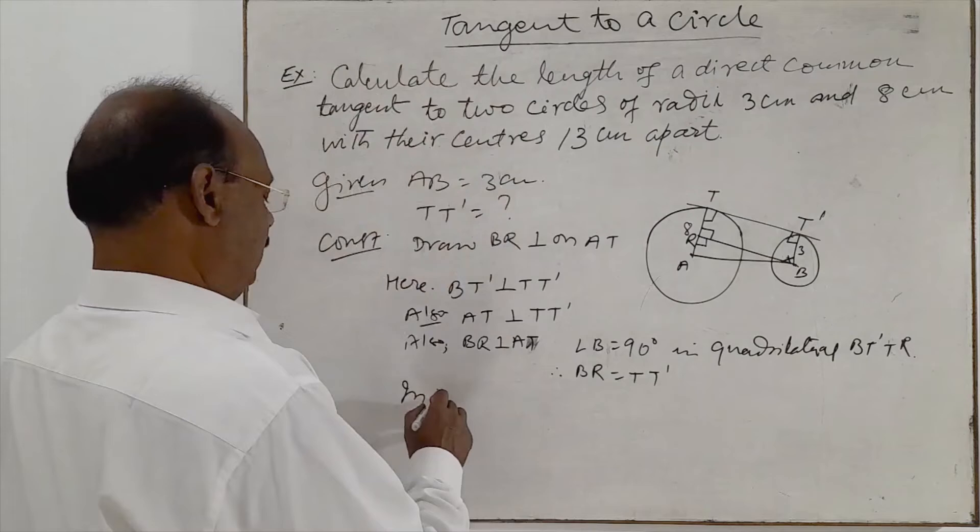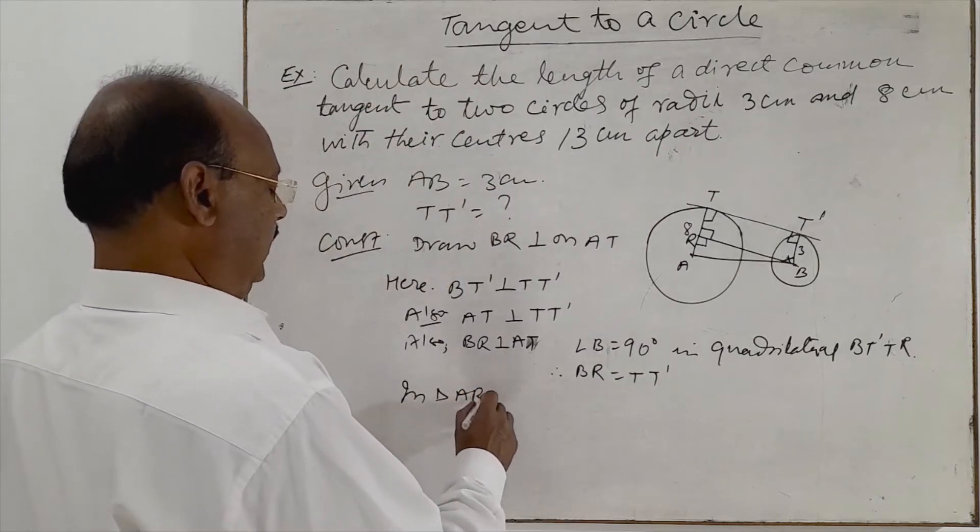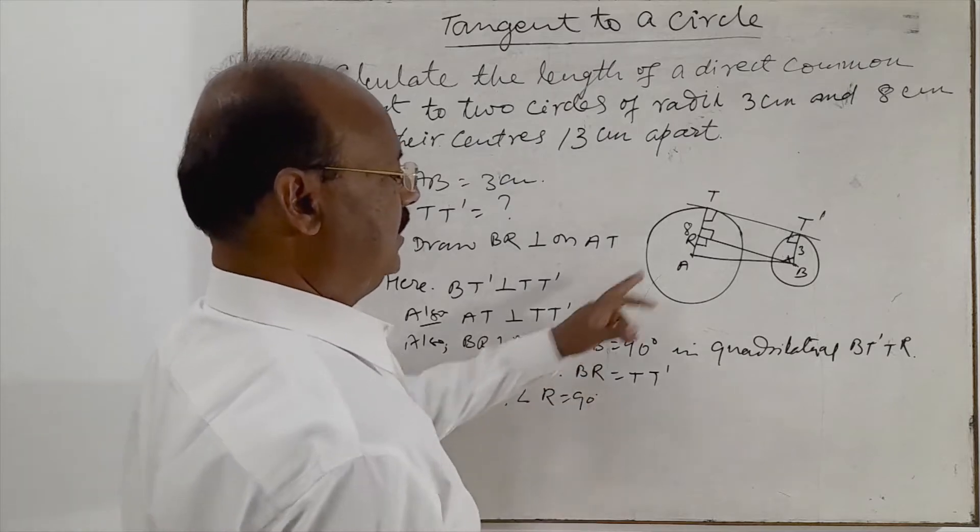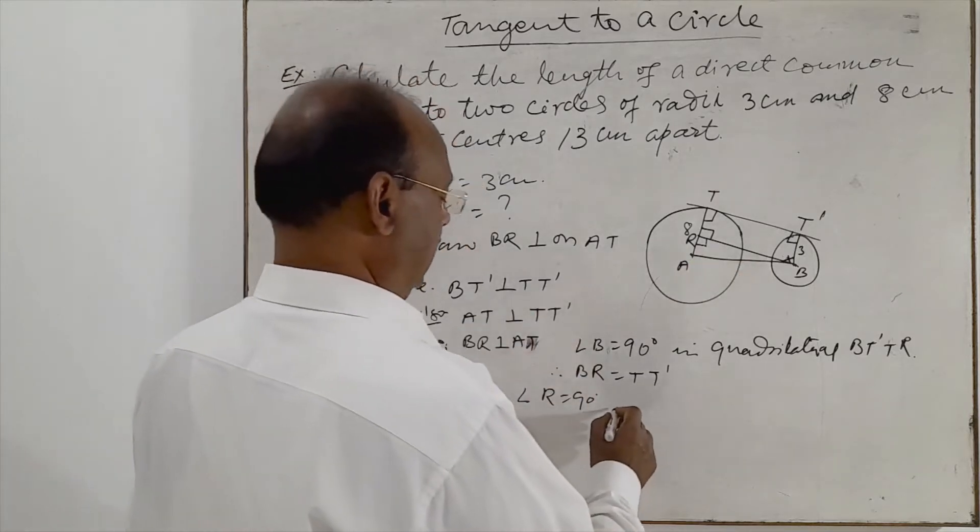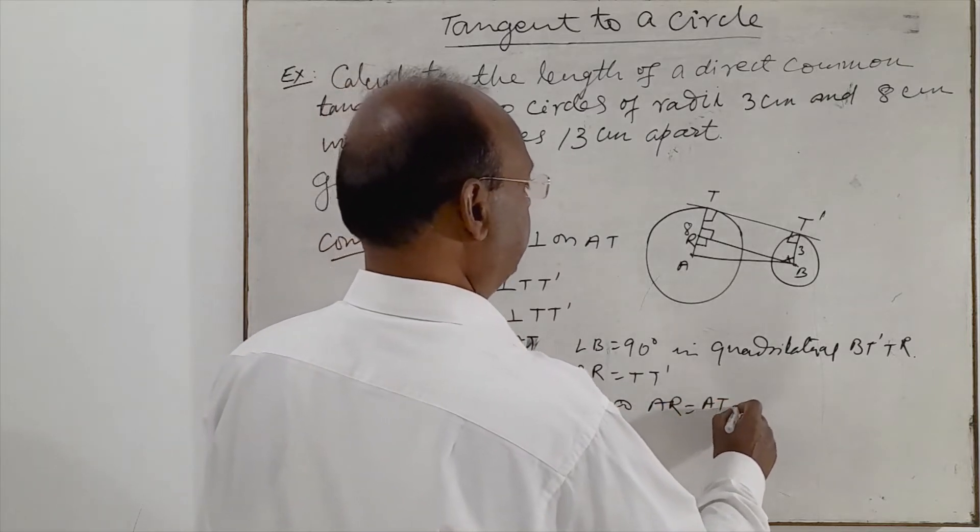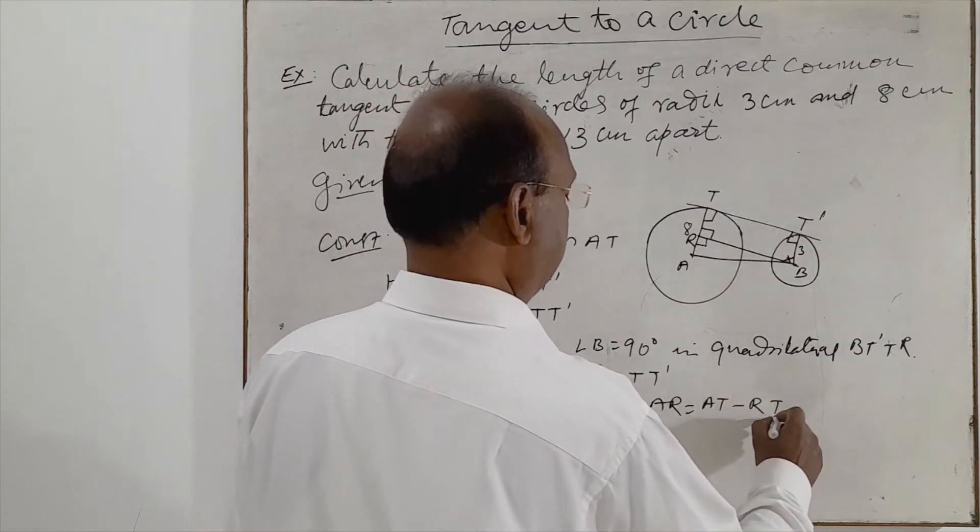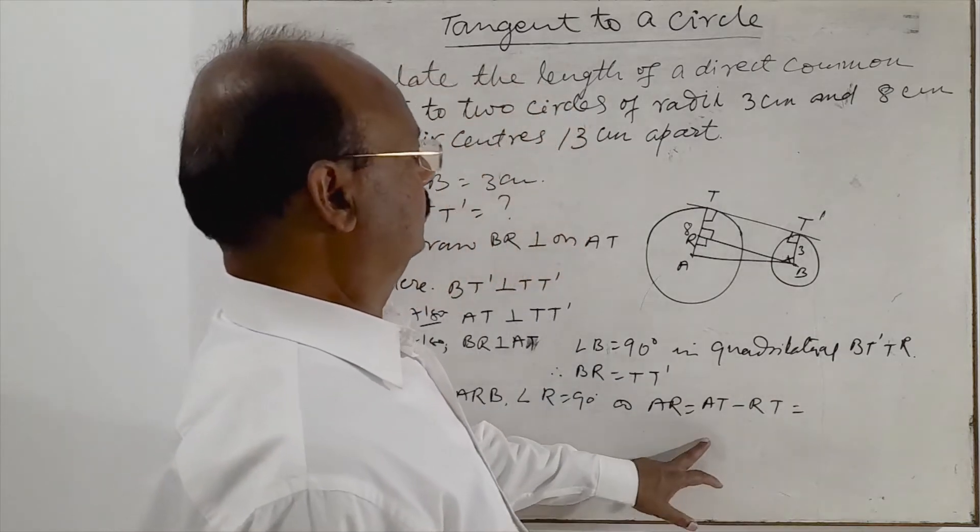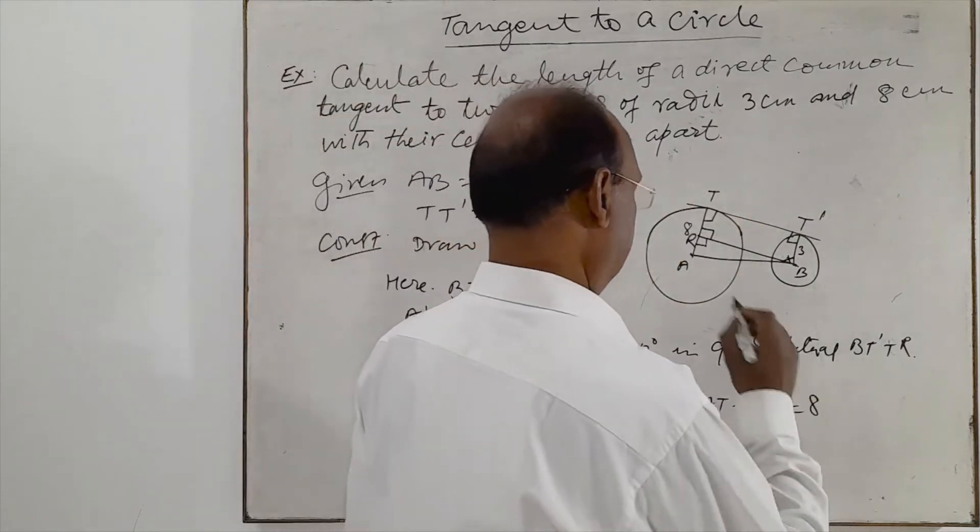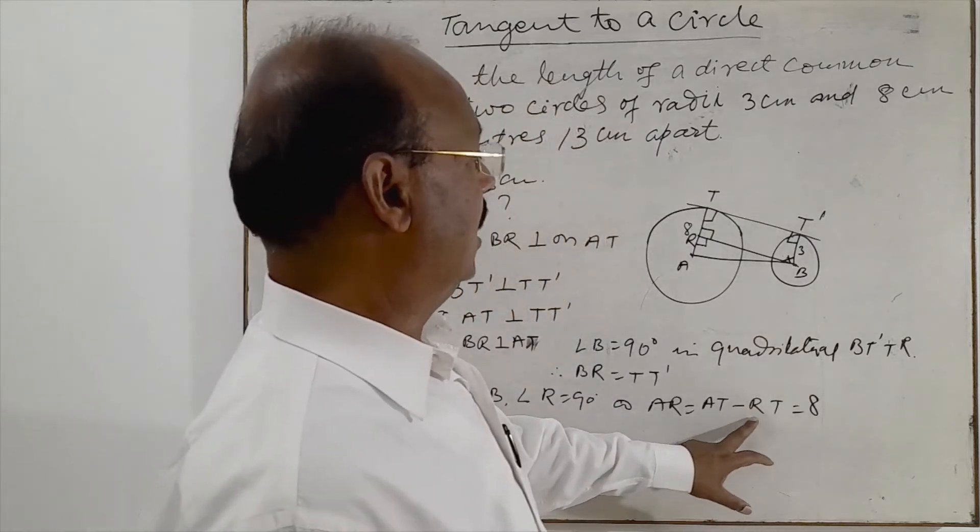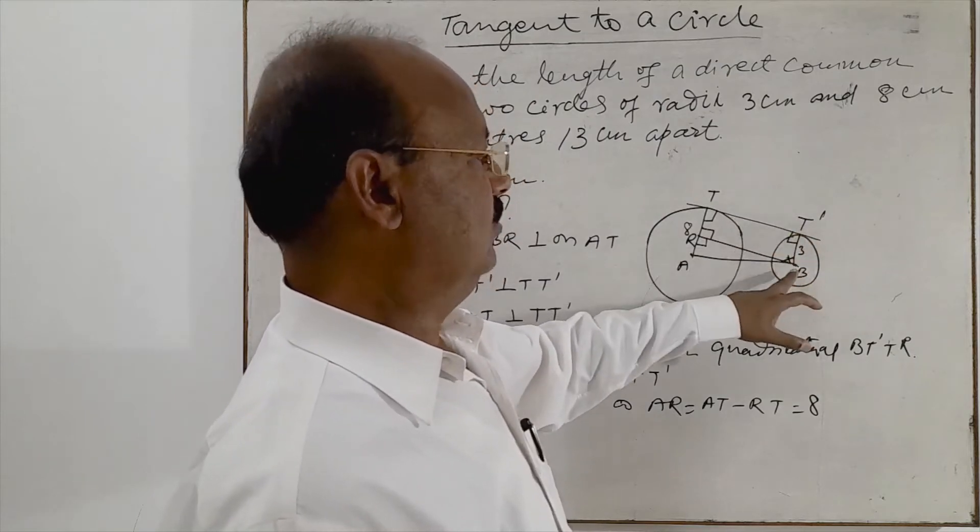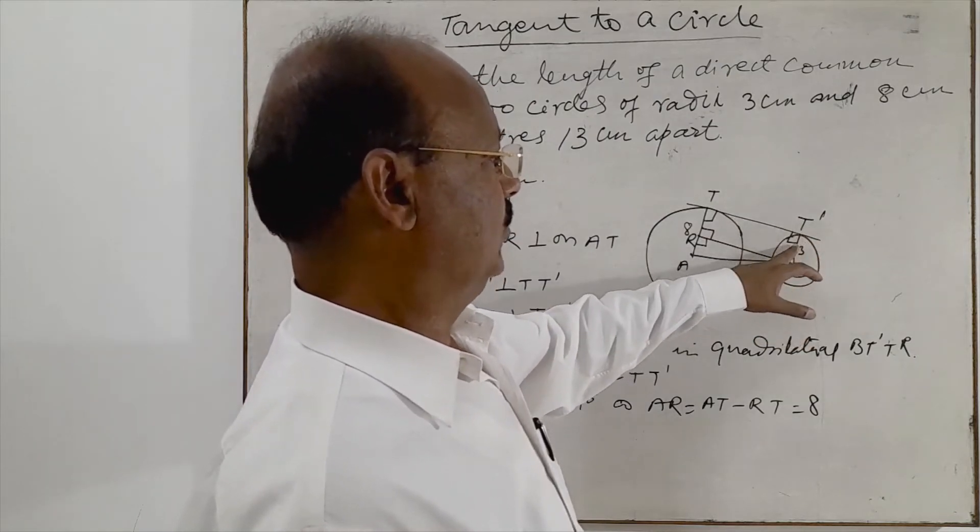Now, let us see in triangle ARB. Angle R is 90 degrees, it means ARB is a right angle triangle and AR is equal to AT minus RT. AT is how much? Radius of this circle is 8 cm. And RT, this RT will be equal to BT'.